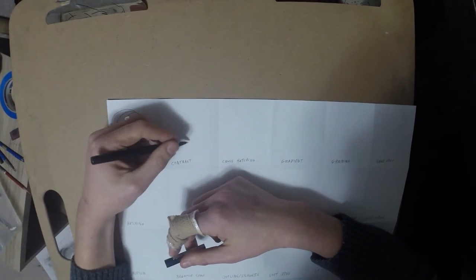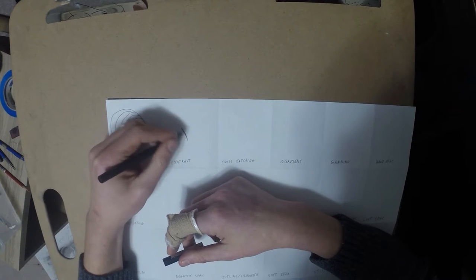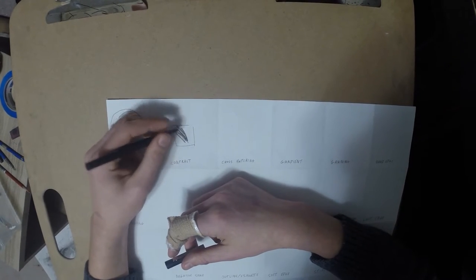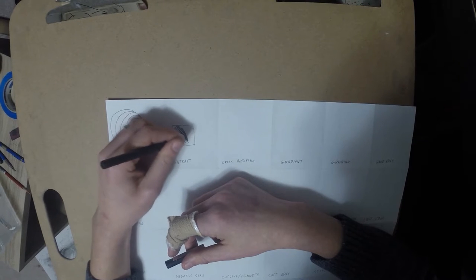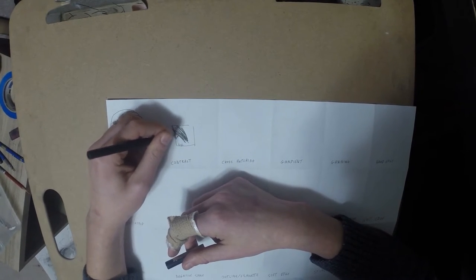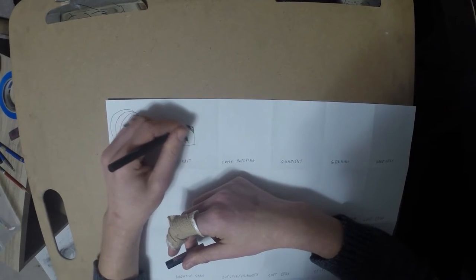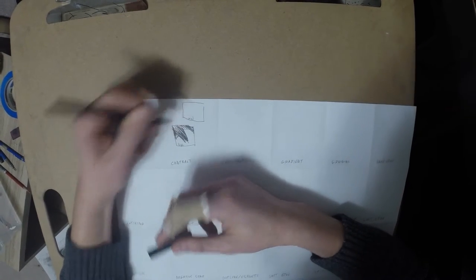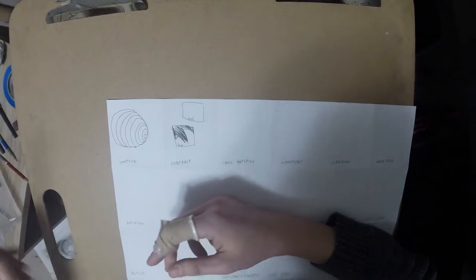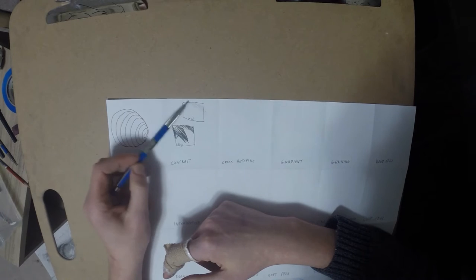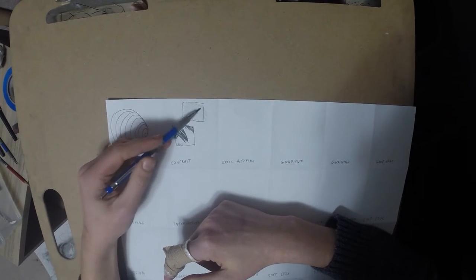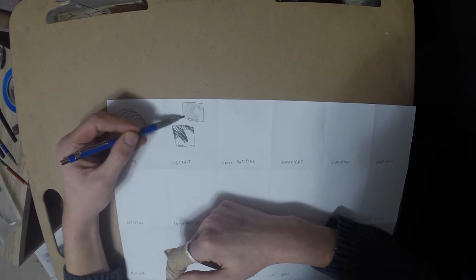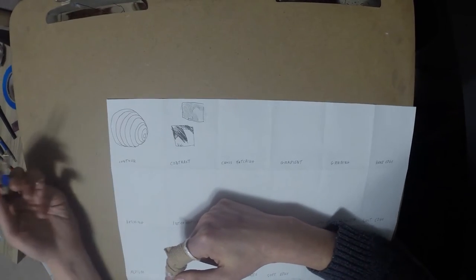Contrast is just lightness versus darkness. This is going to be high contrast. It's just something where it's really stark blacks and stark whites. And something like this would be low contrast. So, these both are just describing a light area and a dark area. But one is really high contrast and one is really low. That's contrast.